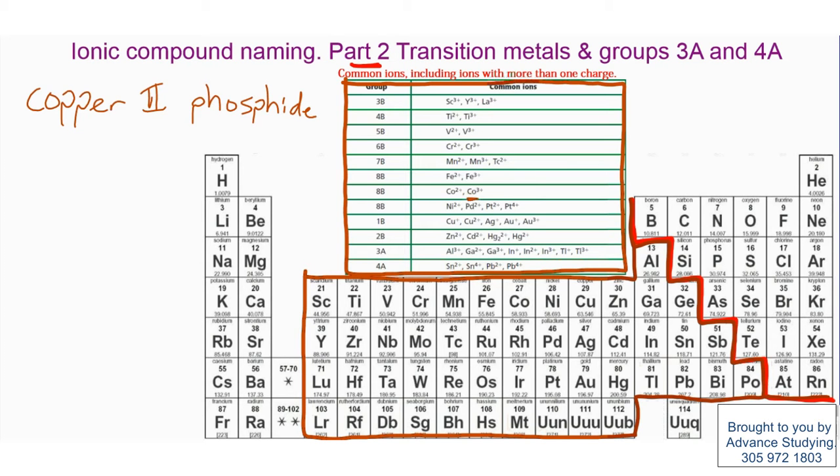I am using copper-2. I know that copper is Cu. In this case, I am giving the charge, charge of 2, 2 positive. And phosphorus, which is phosphide, is P. So we use P, and I see that phosphorus is charge of 3 negative.